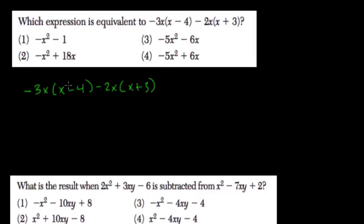Well here we're just using the distributive property and we're going to combine like terms. So minus 3x times x, that's negative 3x squared.